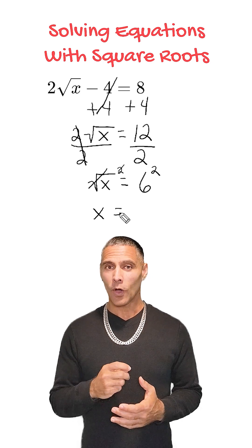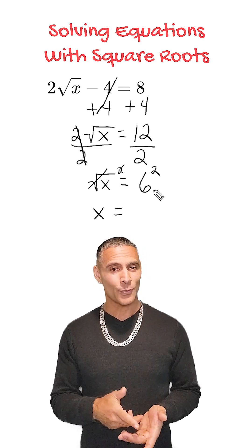To keep the equation balanced, we also square the right-hand side. When we square 6, we get 36.